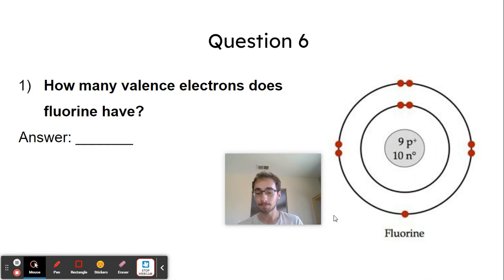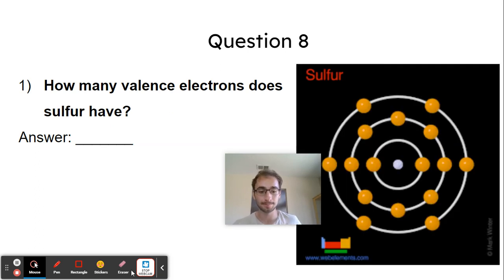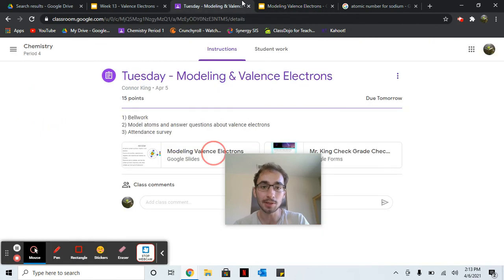Next, please count how many valence electrons does fluorine have. Remember, the electrons are the ones that are on the outside orbital. And then do the same thing with magnesium and sulfur. And once you do that, please check your grade and take the survey.